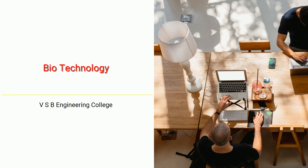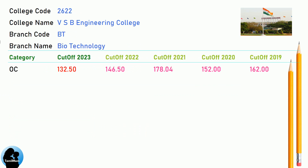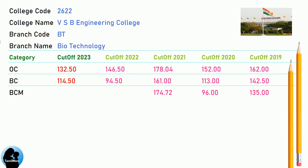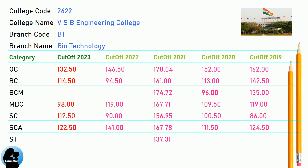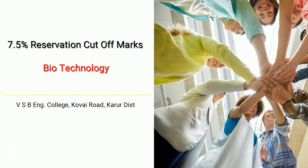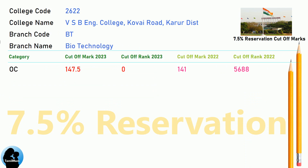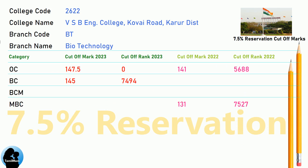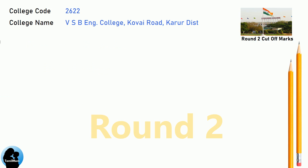DNA Cut-Off for VSB Engineering College in Biotechnology. DNA 7.5 Reservation Cut-Off for VSB Engineering College in Biotechnology. DNA Round 2 Cut-Off for VSB Engineering College in Biotechnology.